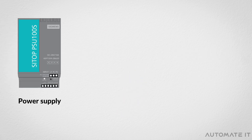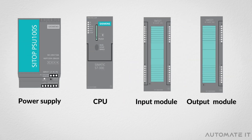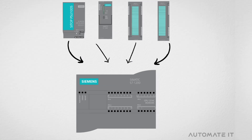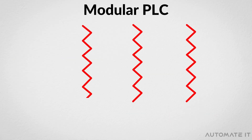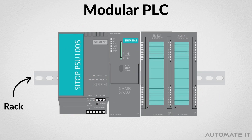The power supply, CPU, and input and output interfaces are all integrated into one module called a compact PLC. While a modular PLC consists of several separated modules such as CPU, power supply, and I/O modules that are connected in a common rack.